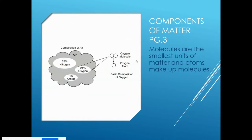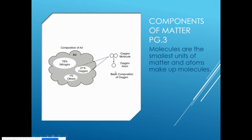Components of matter: molecules are the smallest units of matter and atoms make up molecules. Atoms are the smallest particle, and by combining them we end up getting molecules. With different combinations of molecules and atoms we can make up all the different elements the world is made of. This diagram from the ILM shows the composition of air, starting with oxygen atoms. One oxygen atom by itself doesn't do much, but we know oxygen as O2.